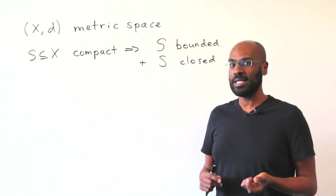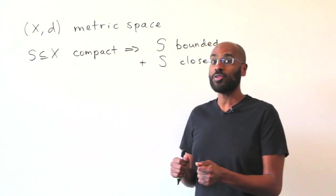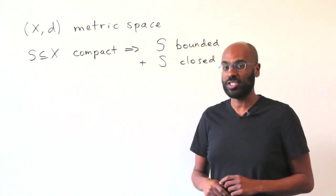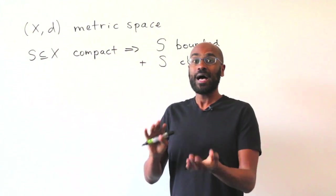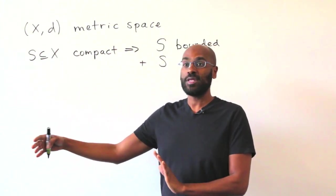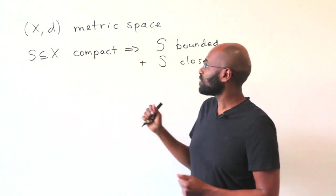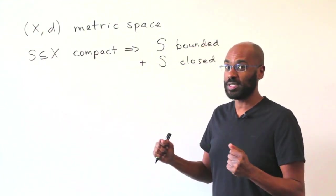In many textbooks on analysis, the proofs of these actually inherit the proofs from topological spaces which are more general than metric spaces, and so their proofs have a little bit more of a lengthy process because they don't have as much to work with. We're going to exploit the fact that we're in metric spaces to do this.